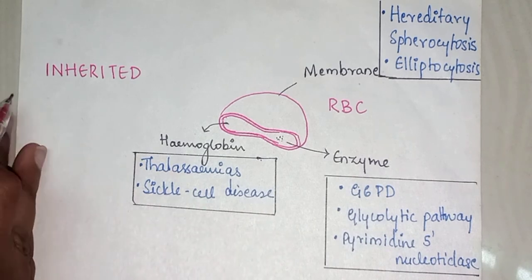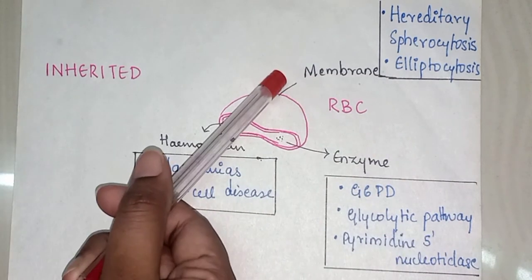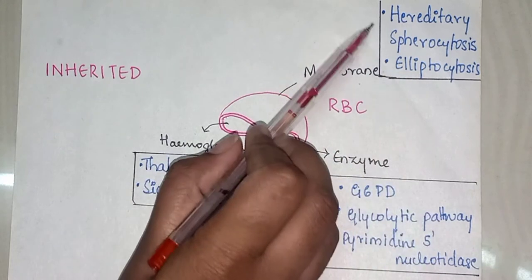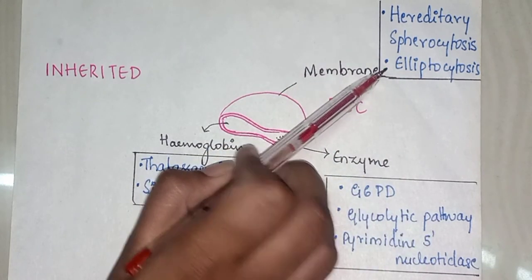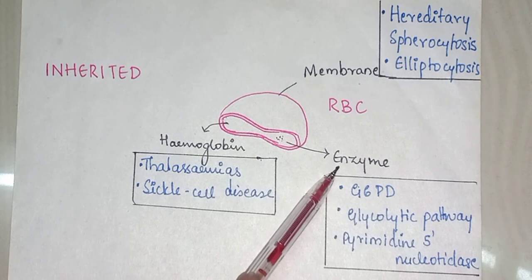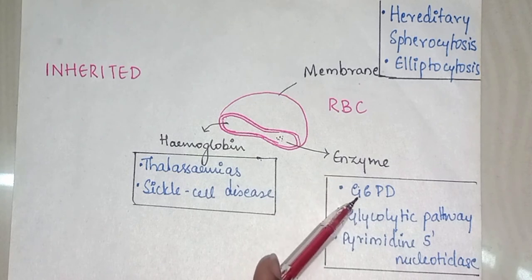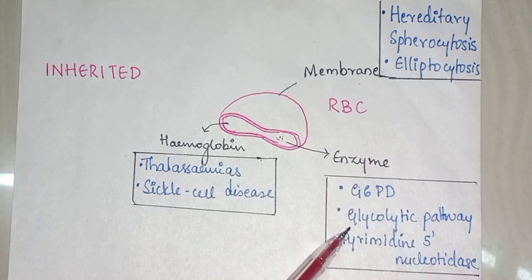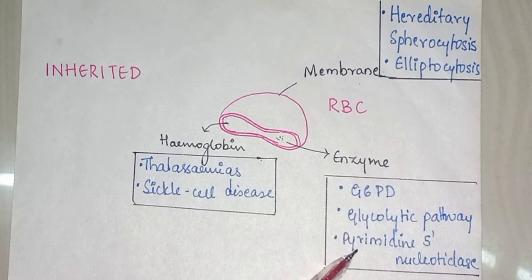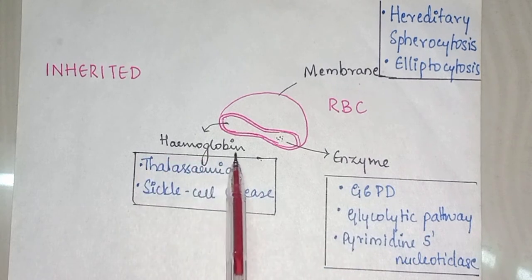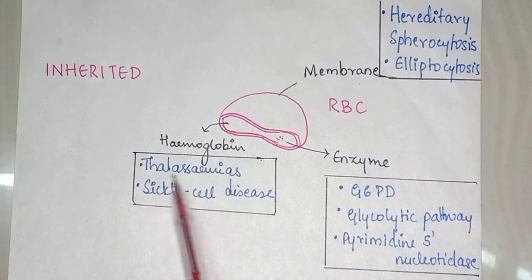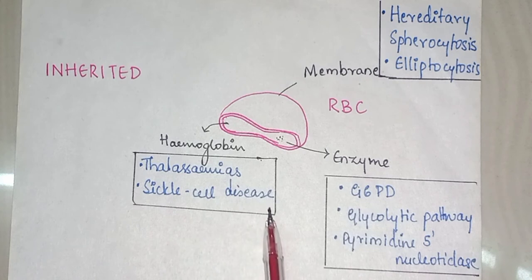So in inherited hemolytic anemia: due to membrane abnormality we have hereditary spherocytosis and elliptocytosis; due to enzyme deficiency we have G6PD deficiency, glycolytic pathway deficiency, and pyrimidine 5-nucleotidase deficiency; and in hemoglobin abnormalities we have thalassemias and sickle cell disease.